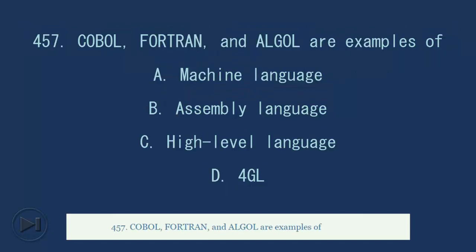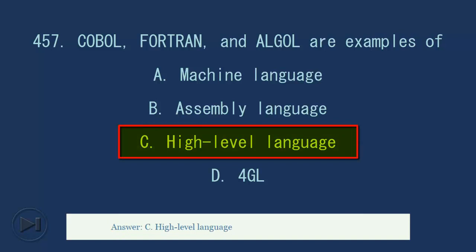457. Cobol, Fortran, and Algol are examples of A. Machine language. B. Assembly language. C. High-level language. D. Four gallons. Answer, C. High-level language.